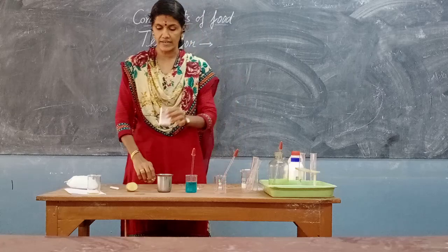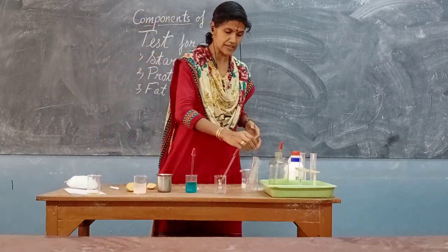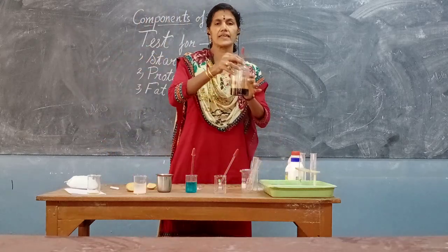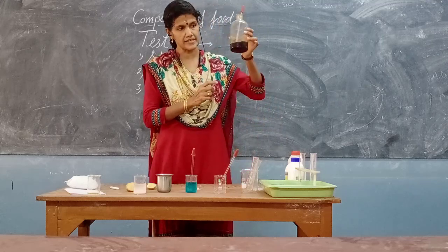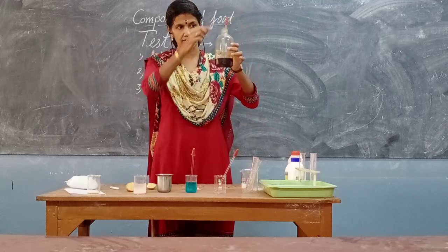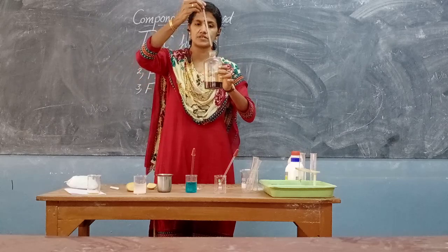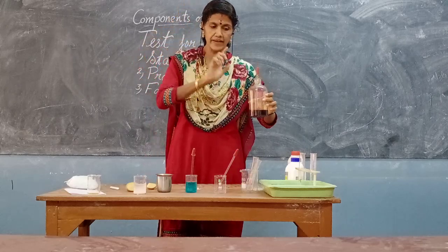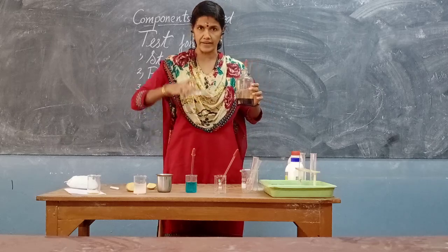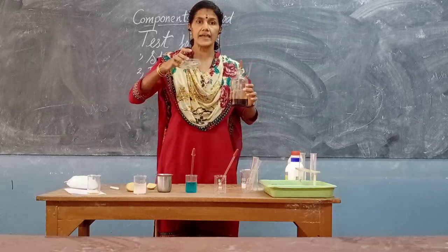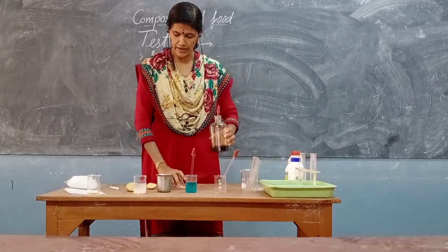Now let us learn how to test the presence of starch. For that, one chemical called iodine — it is a brownish color substance. Iodine solution is there. When we add this iodine solution in the food materials, it will turn into blue-black color. So let us try.